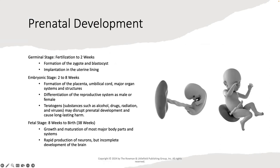Moving on to prenatal development: the zygote enters the germinal stage, involving the formation of the zygote and the blastocyst, which then implants into the uterine lining. Once implanted, it becomes an embryo, where the formation of the placenta, umbilical cord, major organ systems, and structures occurs. The differentiation of reproductive systems as male or female also begins during the embryonic stage. The embryo is very sensitive to teratogens — substances such as alcohol, drugs, radiation, and viruses that may disrupt prenatal development and cause long-lasting harm.